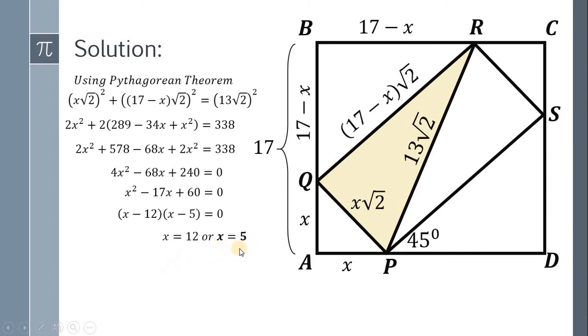So X can be 5 or X can be 12. But with respect to our figure, we choose X equals 5. Therefore, X√2 becomes 5√2, and (17 - X)√2, 17 minus 5 equals 12, so this becomes 12√2.